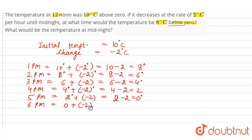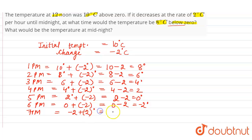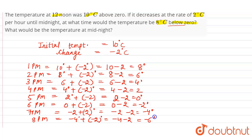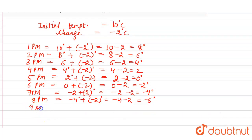At 6 pm, the temperature will be equal to 0 degrees plus minus 2 degrees, which is equal to minus 2 degrees. At 7 pm, the temperature will be equal to minus 2 degrees plus minus 2 degrees, which is equal to minus 4 degrees. At 8 pm, the temperature is minus 4 degrees plus minus 2 degrees, which is equal to minus 6 degrees. At 9 pm, the temperature will be equal to minus 6 degrees plus minus 2 degrees, which is equal to minus 8 degrees.